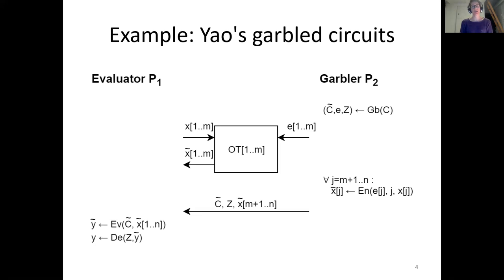The garbler starts by computing a garbling — think of it as an encryption of the circuit — denoted C-tilde, plus some information for dealing with inputs and outputs, E and Z. Both garbler and evaluator need to garble their own inputs so the evaluator can later evaluate the garbled circuit and garbled inputs. For the garbler it's easy; they can just garble their own inputs. For the evaluator, it's not as easy because the garbler is not supposed to learn x1. So they run an oblivious transfer protocol, where the evaluator inputs their value and the garbler inputs encoding information E, and the evaluator learns a garbling of their own input. The garbler then sends the garbled circuit, their own garbled input, and decoding information to the evaluator, who evaluates the garbled circuit on the combined garbled inputs to learn a garbled output, decodes it, and possibly sends the result back to P2. This protocol achieves semi-honest security.